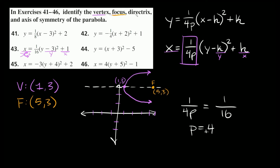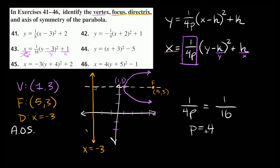The directrix is also 4 spaces from the vertex but in the opposite direction, so going left from x equals 1 by 4 spaces puts it at x equals negative 3. This creates a 90 degree angle with the axis of symmetry, which is why we draw it vertically. The axis of symmetry runs straight through the vertex horizontally, hitting the y-axis at 3, so the axis of symmetry is y equals positive 3.